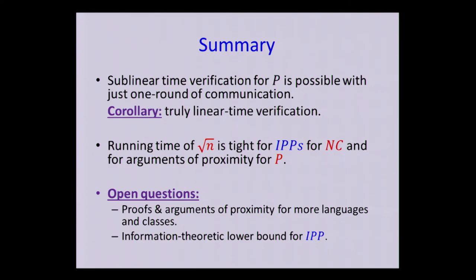And just to open questions that I'd like to conclude with is, first of all, what about constructing better proofs or arguments of proximity for more languages or more classes? So some progress on that has been made. So in our joint work with Goldreich and Gur, we have a construction of interactive proofs of proximity for certain subclasses of NC with, say, polylogarithmic complexity rather than the square root of N. But I think getting, even for, like, specific properties that people in the property testing literature are interested in, getting improved results specifically for those would be very interesting.